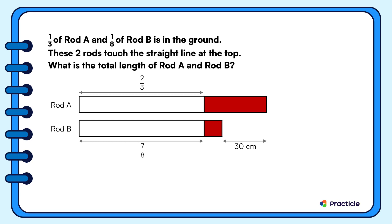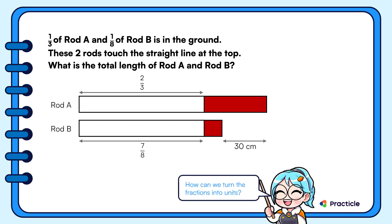We know that the fraction two thirds and seven eighths represents the same length of the rod. So instead of working with fractions, let's turn everything into units so that we can compare them easily. Now how can we do that? Do you think of making the numerators the same? If you did, great job. What's the common multiple between 2 and 7? Yes, 14. So two thirds is the same as 14 over 21, and seven eighths is the same as 14 over 16.